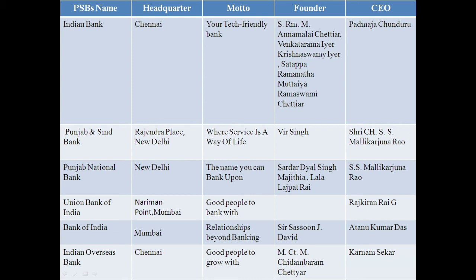Our next bank is Union Bank of India. Union Bank of India's main headquarter is at Nariman Point, Mumbai, and its motto is 'Good People to Bank With.' This bank was founded on 11th November 1919 and its owner is the Government of India. The current CEO is Raj Kiran Rai Ji. Our next bank is Bank of India. Its head office is in Mumbai and its motto is 'Relationships Beyond Banking.' This bank was founded on 7th September 1906 by Sir Sassoon J. David, and its current CEO is Atanu Kumar Das Ji.